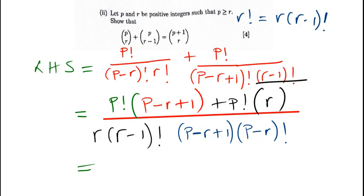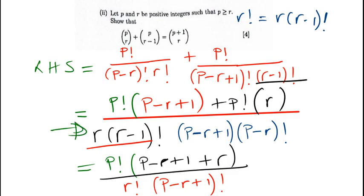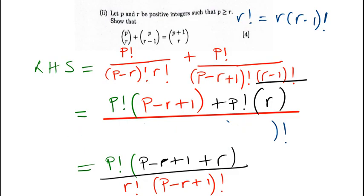On the top, p factorial is common. Factoring out p factorial, what remains on the first part is p minus r plus one, and on the other part what remains is plus r. We can combine this: r times r minus one factorial is the same as r factorial, and the other part is p minus r plus one factorial. So here we had expanded, and at this point we've actually compressed it.